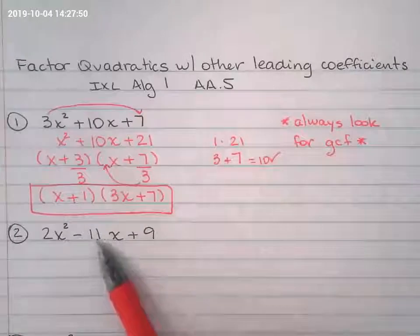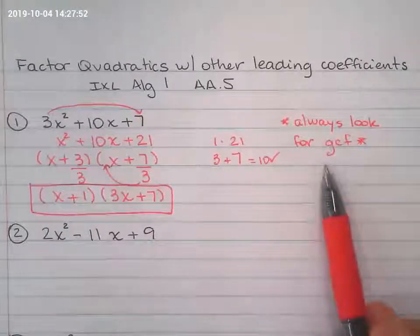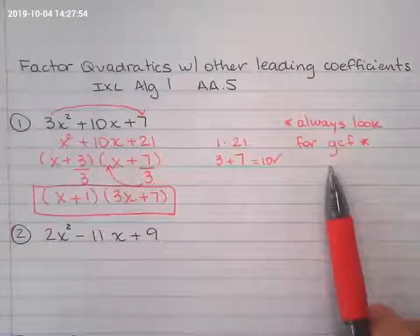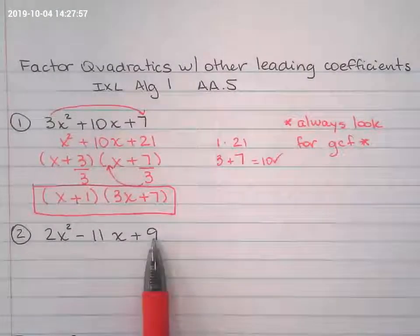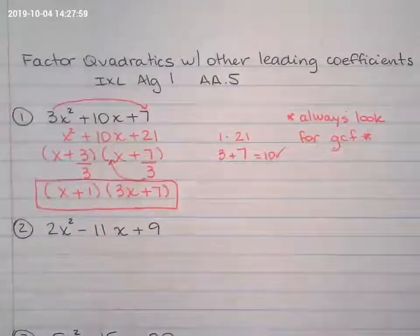All right. The second one, always look for the GCF. Always look for greatest common factor. I don't have anything there that I can divide by and pull the GCF out.